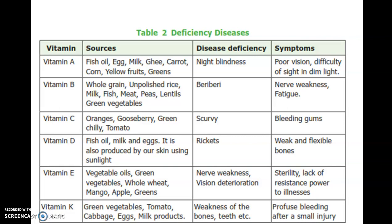The vitamin deficiency table lists vitamins, their sources, deficiency diseases, and symptoms. For example: if you don't take Vitamin A, it leads to night blindness; Vitamin B deficiency leads to beriberi, which causes nervous weakness; Vitamin C deficiency leads to bleeding gums; Vitamin D deficiency leads to weak and flexible bones. Not taking Vitamin A or Vitamin K can also lead to specific diseases.